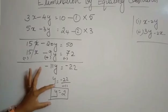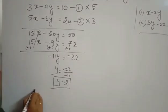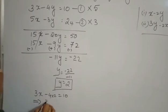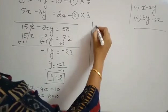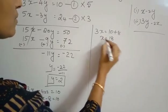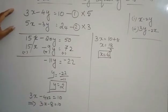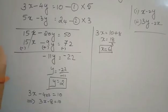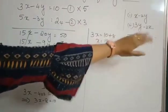Now substitute the value of y into any one equation to find x. Substituting into the first equation: 3x minus 4 times 2 equals 10, which gives 3x minus 8 equals 10, so 3x equals 18, and x equals 18 divided by 3, which equals 6. We get x equals 6 and y equals 2. Along with this equation, there are sub-questions: after finding x and y, we need to find x minus 2y and 3y minus 2x.